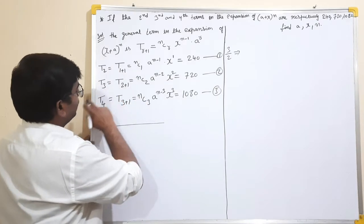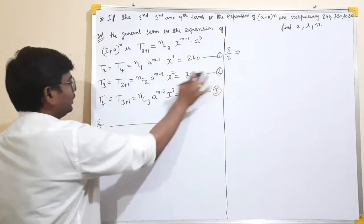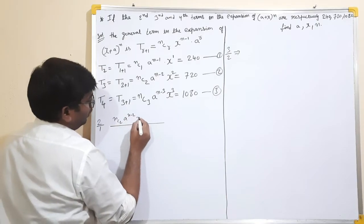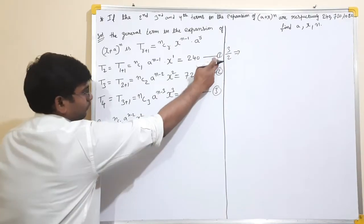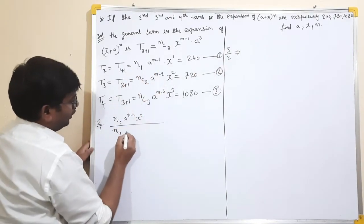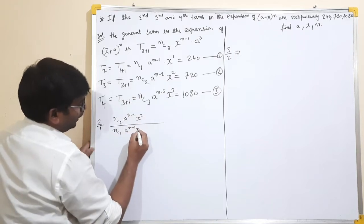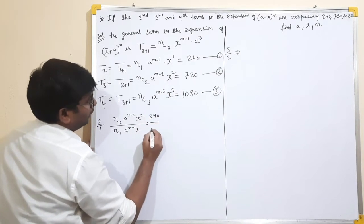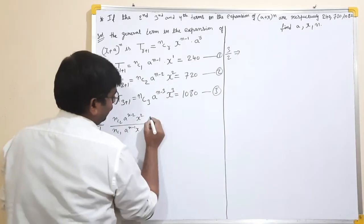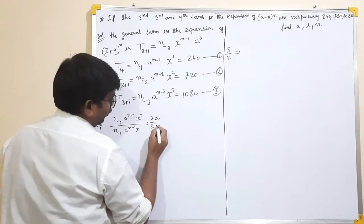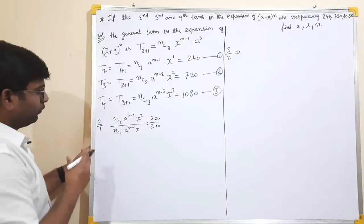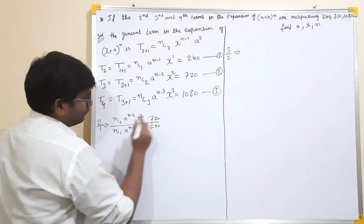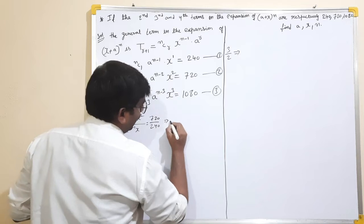The second equation is NC2 * A^(N-2) * X^2 = 720. Dividing: 720 by 240. Now let us start working through the expansion and solve this division step by step.